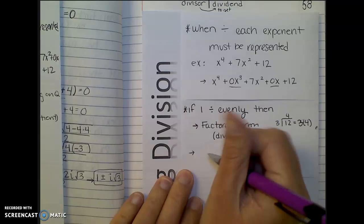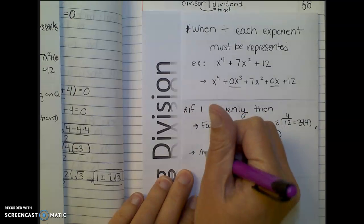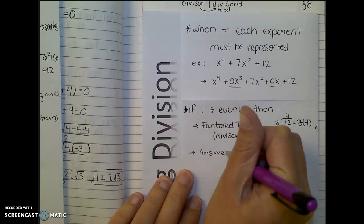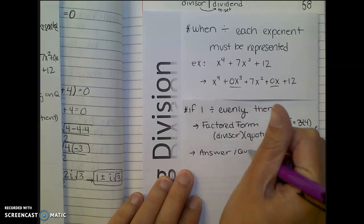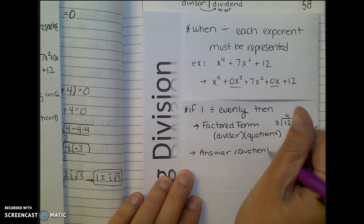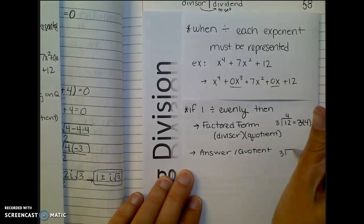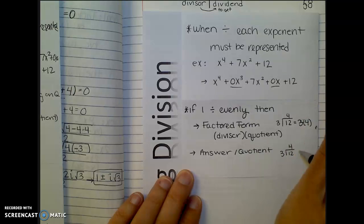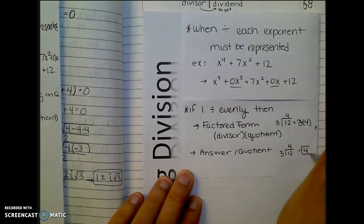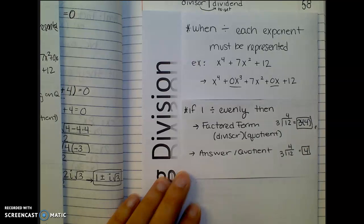Versus if the question just wants the answer, like what is the quotient. Well then if I'm dividing 3 into 12, then my quotient or my answer is just 4. So it really depends on what the question asks for.